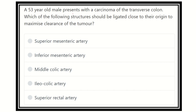So here, a 53-year-old presented with carcinoma of the transverse colon, and which vessel should be ligated close to the origin to maximize clearance of the tumor? For the carcinoma of the transverse colon, the transverse colon should be cut and the vessels ligated. We have to find out which vessels should be ligated to limit the spread of the tumor.